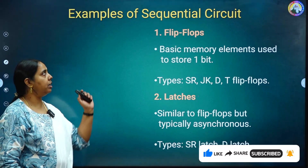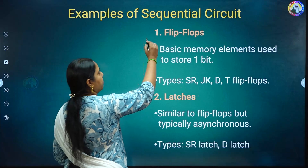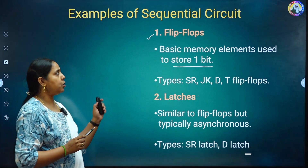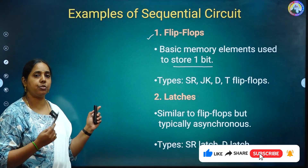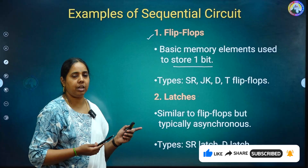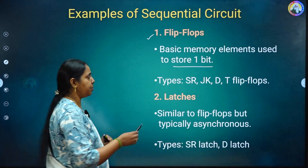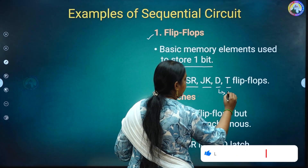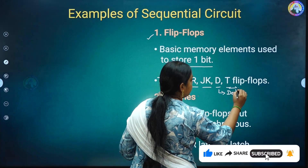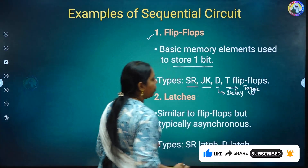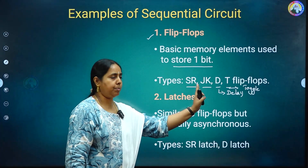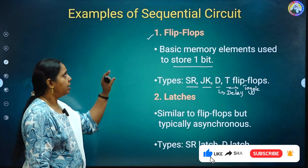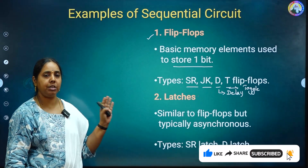The first example is the flip-flop. A flip-flop is a memory element used to store only one bit of information. We have four types of flip-flops: SR flip-flop, JK flip-flop, D flip-flop (where D represents Delay), and T flip-flop (where T represents Toggle). In detail, all these types will be covered in the next video.